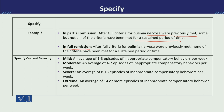In full remission, the symptoms of Bulimia Nervosa were fully present, but after some time there is a complete absence of symptoms. So the difference between partial and full remission is that in one case a few symptoms remain, and in the other there is a complete absence of symptoms. Then we check the severity level: mild, moderate, severe, and extreme.